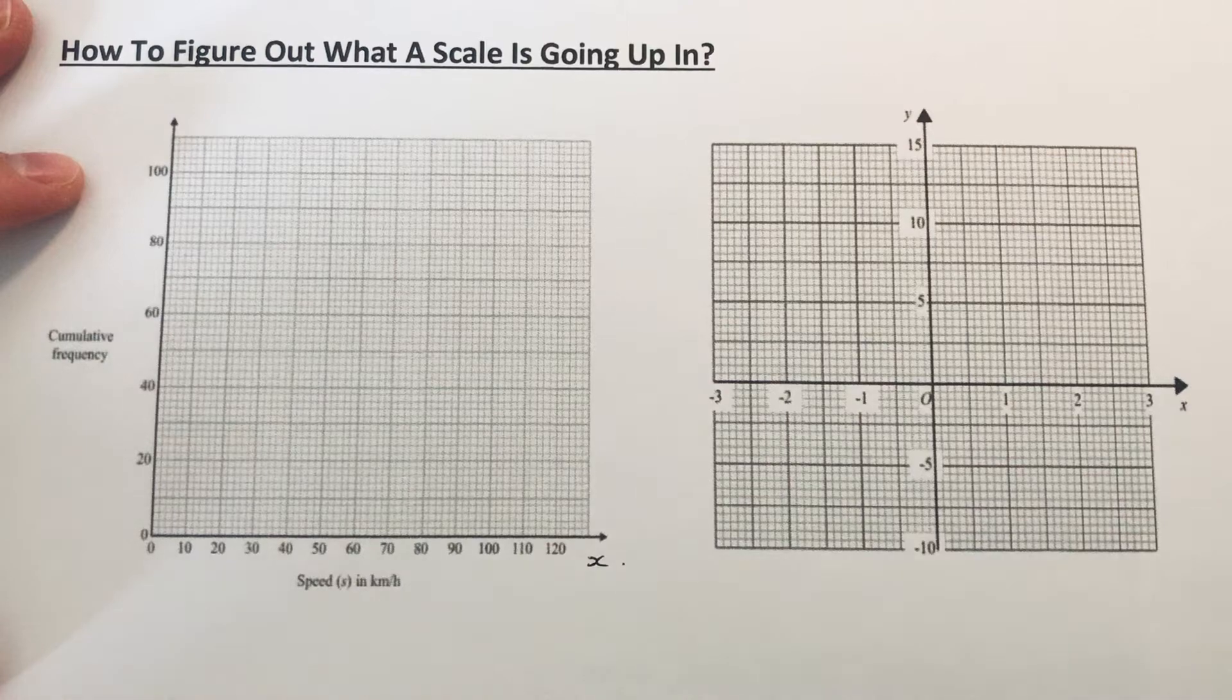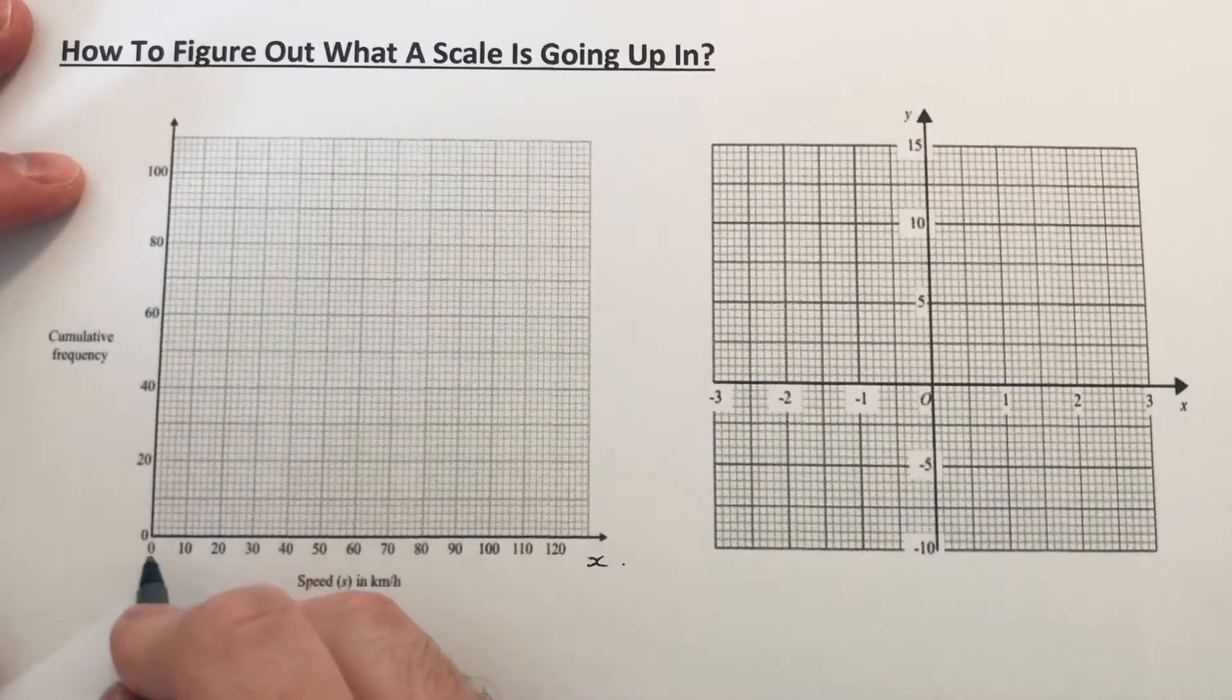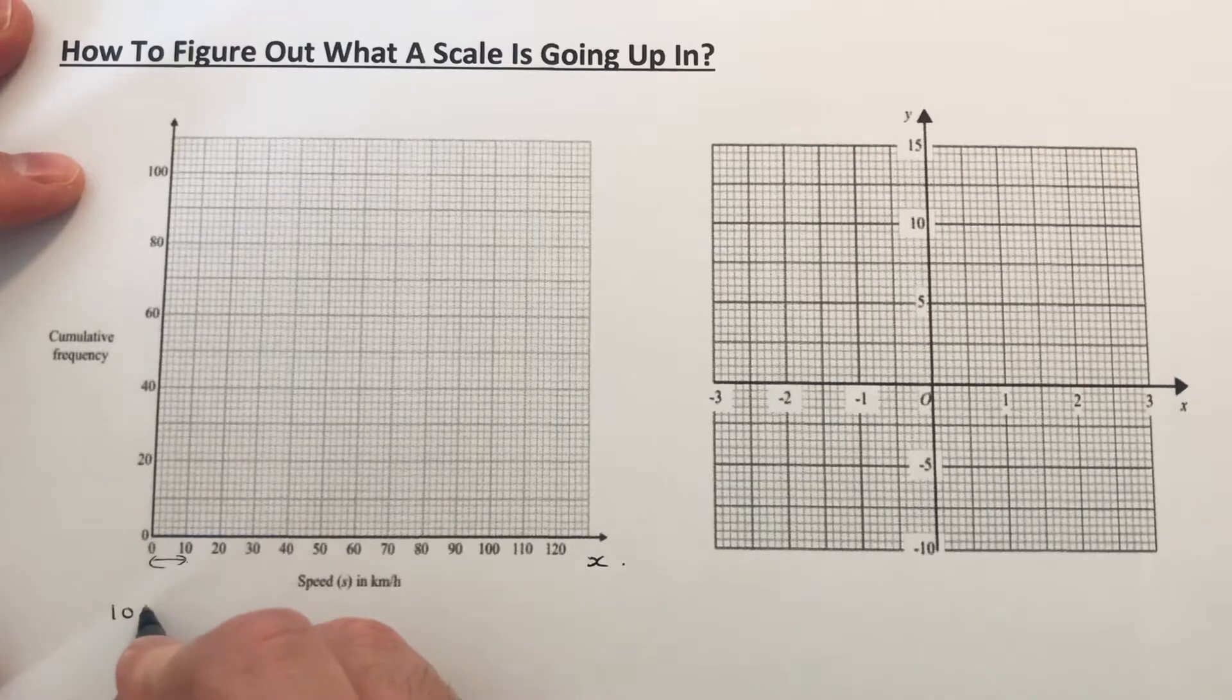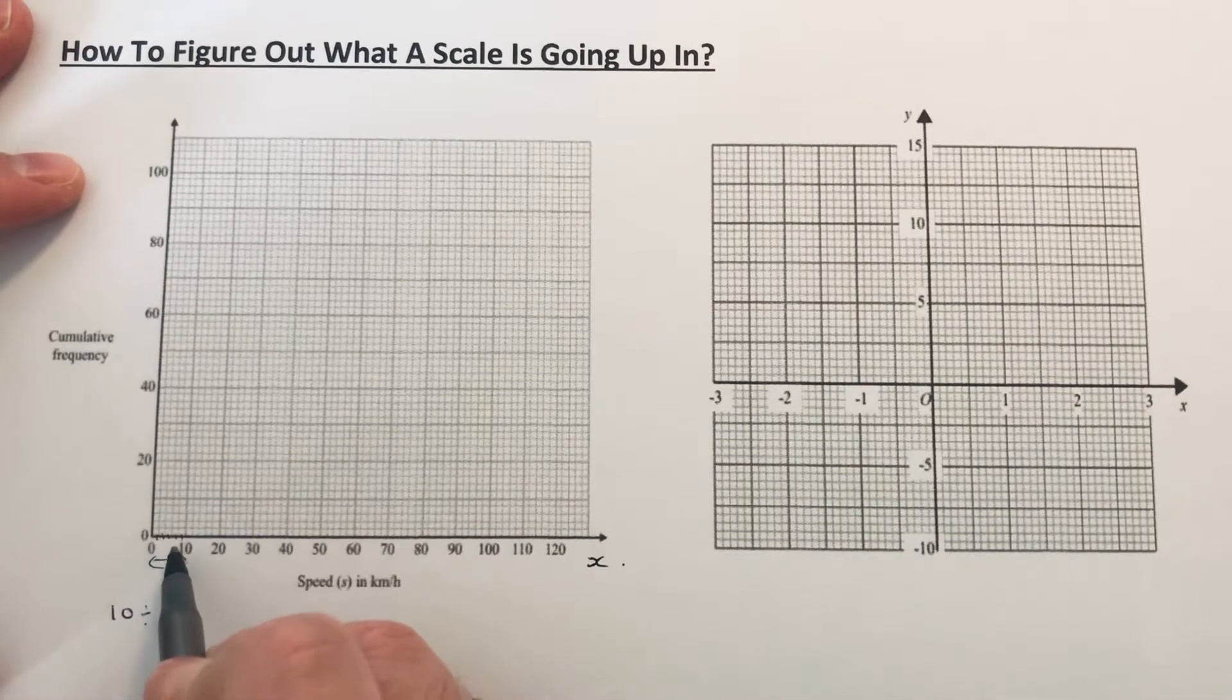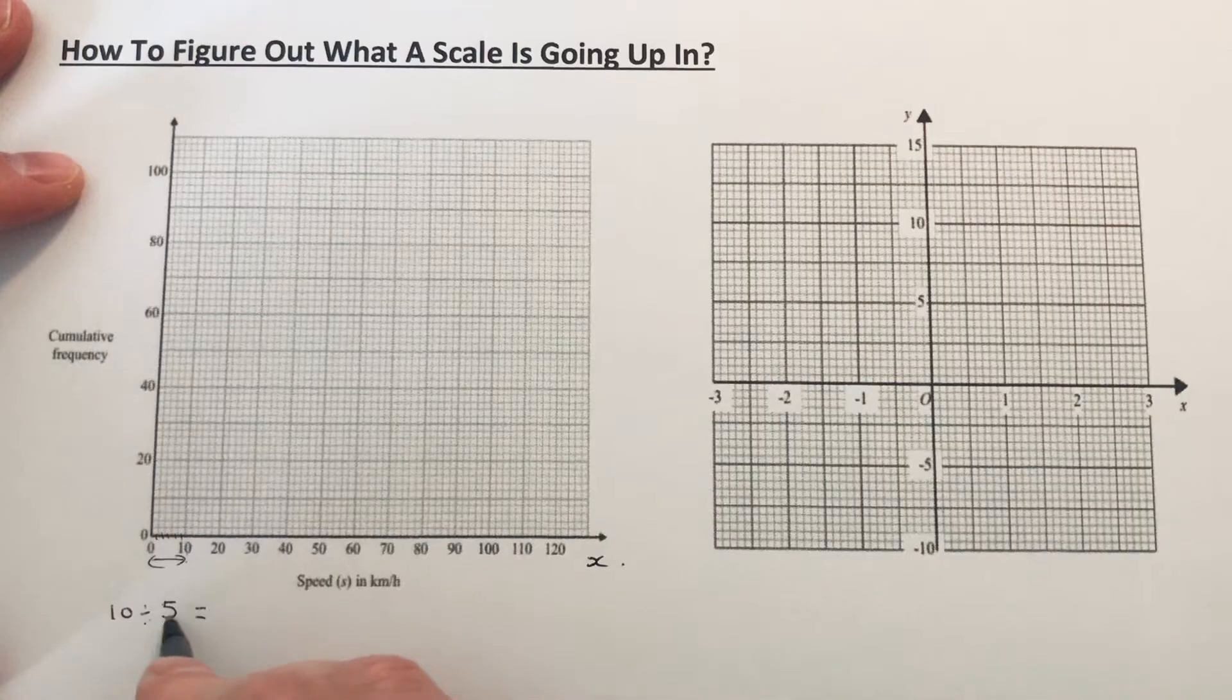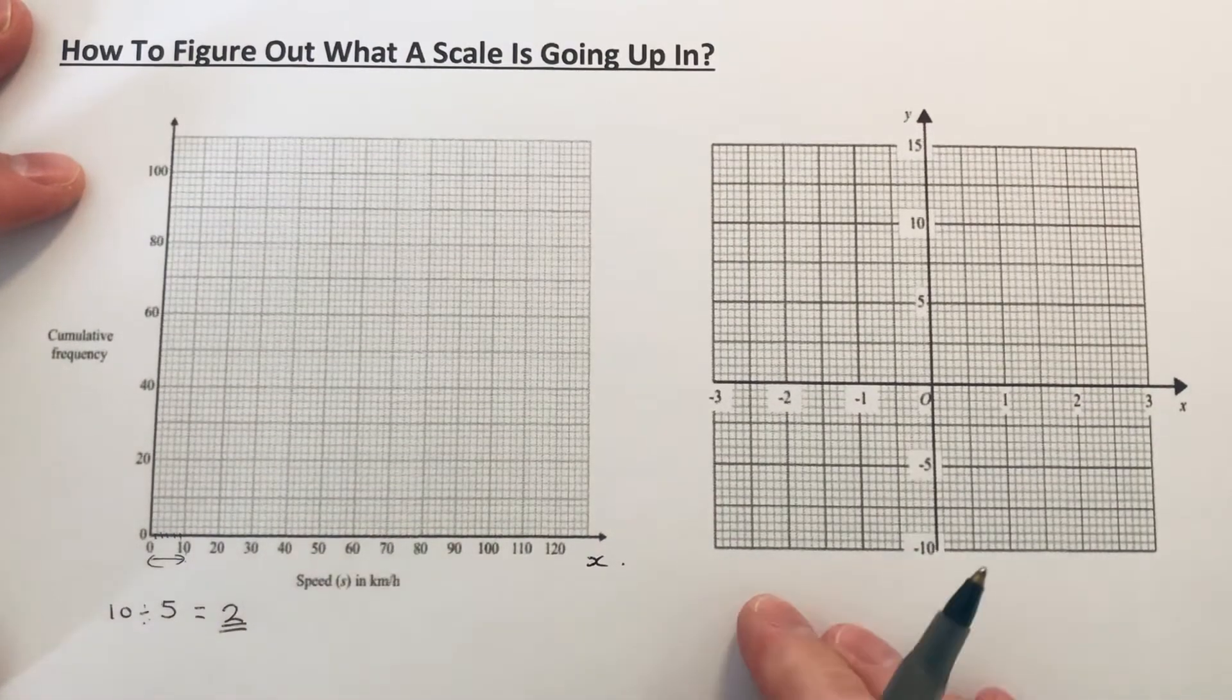But we just need to find out what the little square is. It's going along in tens here, so if we do ten divided by... we've got one, two, three, four, five, five squares in between the zero and ten. So ten divided by five is two, so every little square going across is two units.